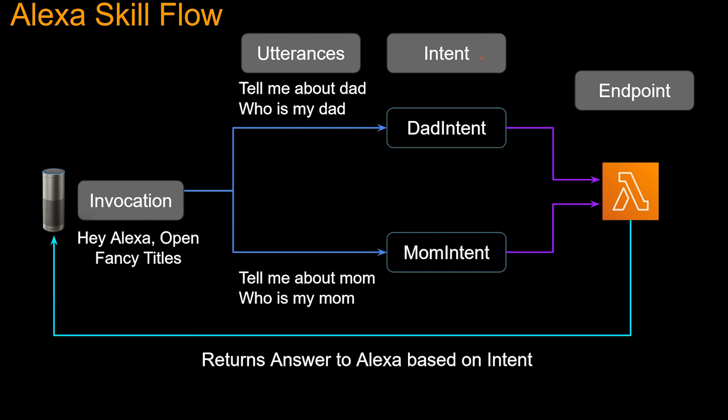I'm going to explain intent next and come back to utterances. An intent represents an action that fulfills a user's spoken request. You will have different intents for different Alexa responses. So in our case, if you ask Alexa 'tell me about dad' or 'who is my dad,' that's one intent. And if you ask 'tell me about mom' or 'who is my mom,' that's another intent. And the words you say to invoke different intents are called utterances. So 'tell me about mom' or 'tell me about dad' are the utterances.